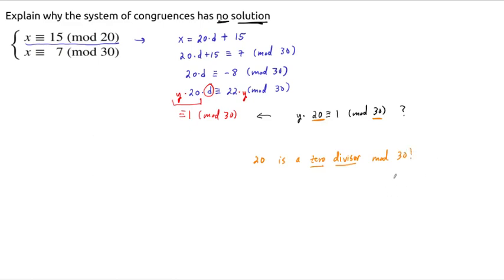Remember, we had these definitions of zero divisors and then invertible numbers. And zero divisors do not have inverses. So, 20 is a zero divisor mod 30. Do we believe this? Well, yeah, because 20 times 3 is equal to 60, which is congruent to 0 mod 30. And so, if 20 is a zero divisor, then 20 has no inverse. So, 20 has no inverse modulo 30.